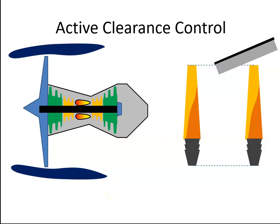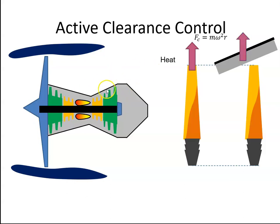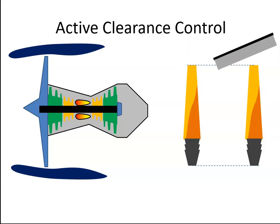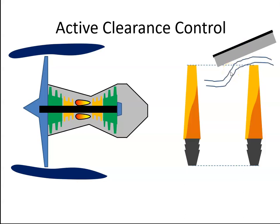In the turbine section, when the engine is operating, the turbine blades will be subjected to centrifugal force and to some heat, but the case will also be subjected to this heat. What can happen is we can get a gap between the turbine blade and the case. And if that gap exists, then air can bypass the blade and that will lead to an inefficient engine.